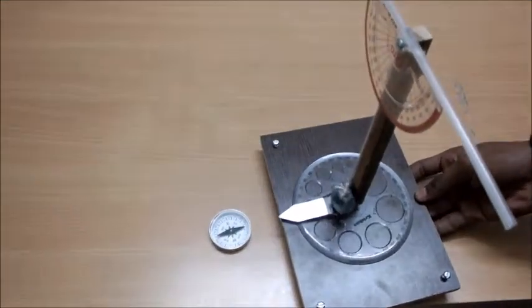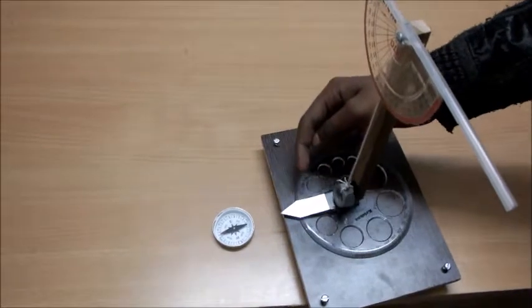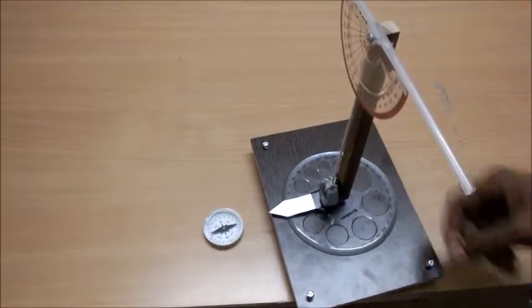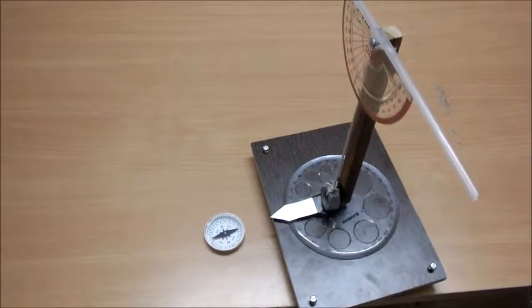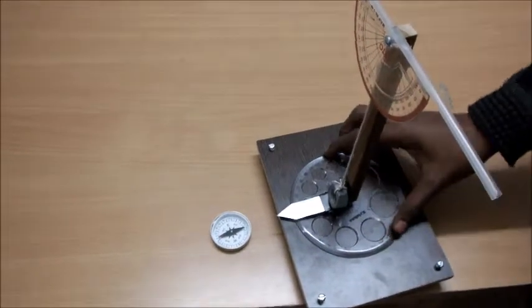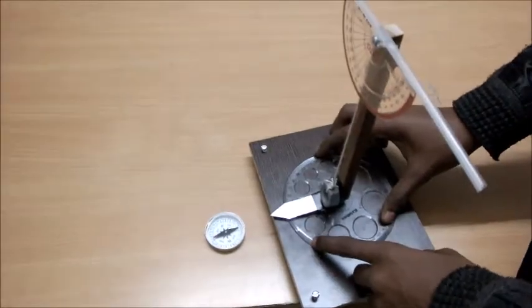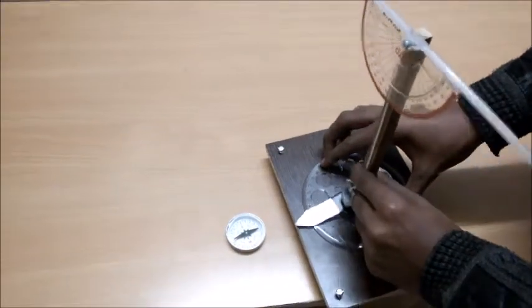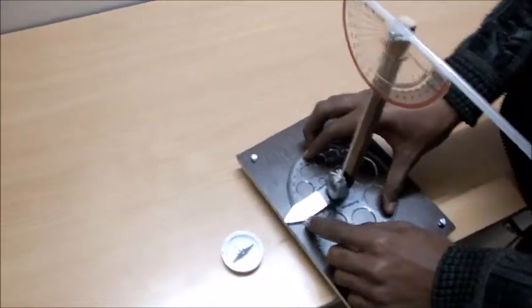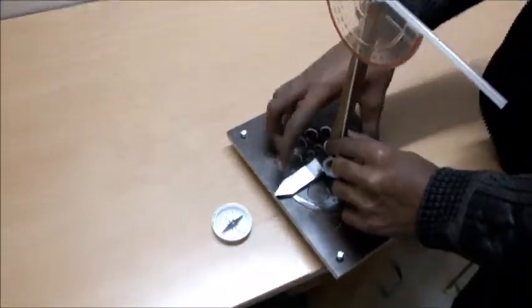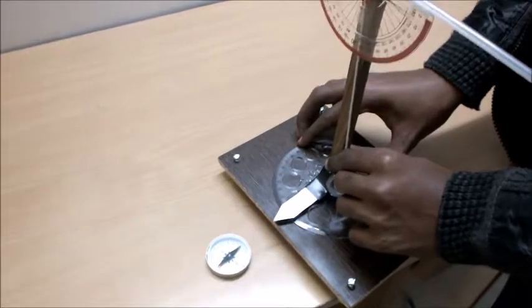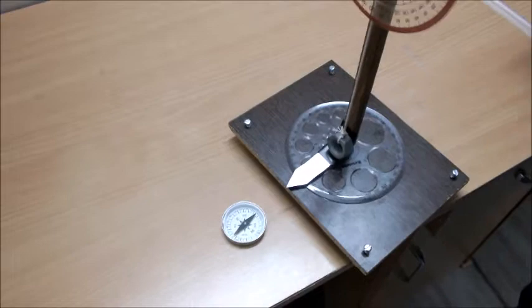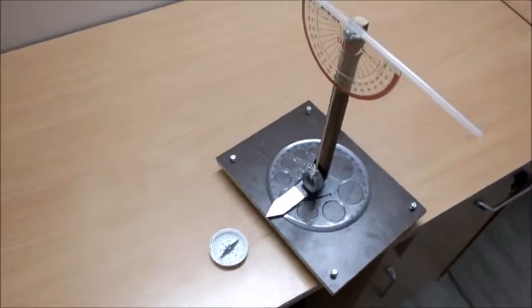What we will do next is take this full protractor, and the zero of this full protractor we will make sure should point towards the north direction along with the metal arrow, like this. Now as the setup is done.